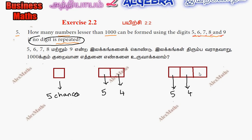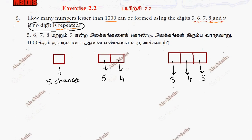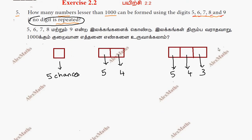For three-digit numbers, we have 5 chances for the first digit, 4 for the second, and 3 for the third. Numbers less than 1000 go up to a maximum of 999, so three-digit numbers are included. Three-digit numbers possible = 5 × 4 × 3 = 60.